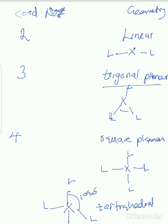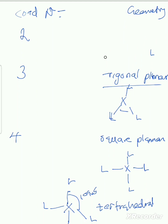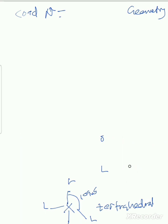So remember: coordination number two is linear, three is trigonal planar, four is square planar at 90 degrees or tetrahedral at 109.5 degrees depending on the arrangement. Now for coordination number five — since we have five — this geometry is called trigonal bipyramidal.